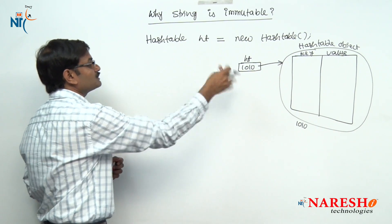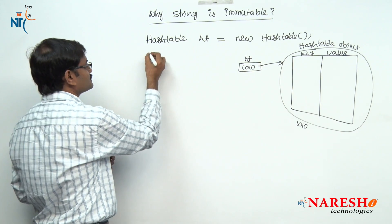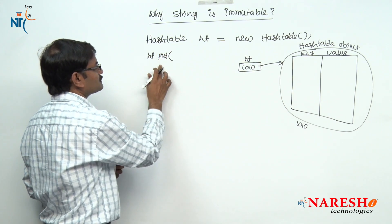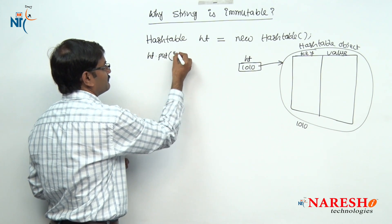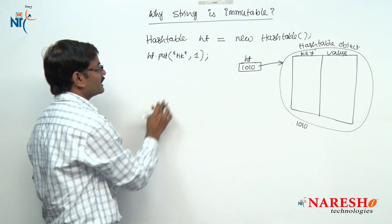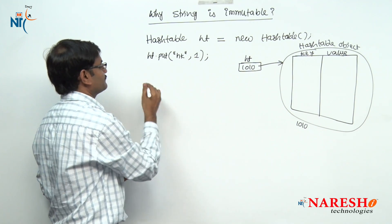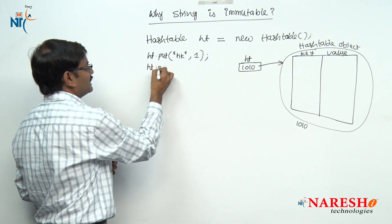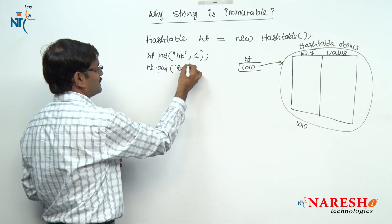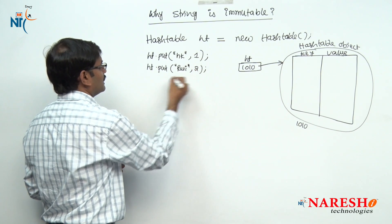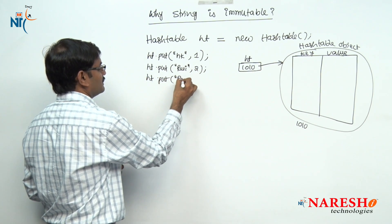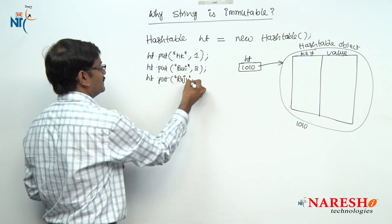Now I want to store some entries inside this Hashtable object. The method to store is put(). I want to store my name: ht.put("hk", 1) — hk is the key and 1 is the value. Next, ht.put("Ravi", 2), and ht.put("Raju", 3).